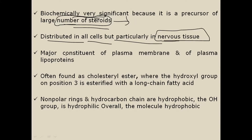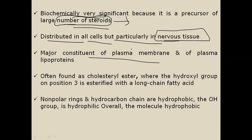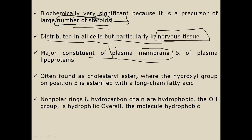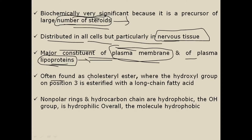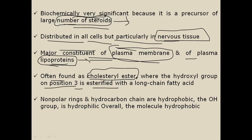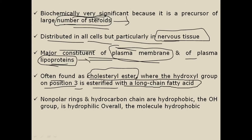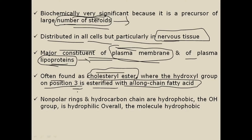Cholesterol is distributed in all cells but particularly in nervous tissues. It is the major constituent of the plasma membrane and is also present in plasma lipoproteins where it acts as a transport molecule. Cholesterol is often found as cholesteryl ester, where the hydroxyl group at position three in the ring is esterified with a long chain fatty acid.